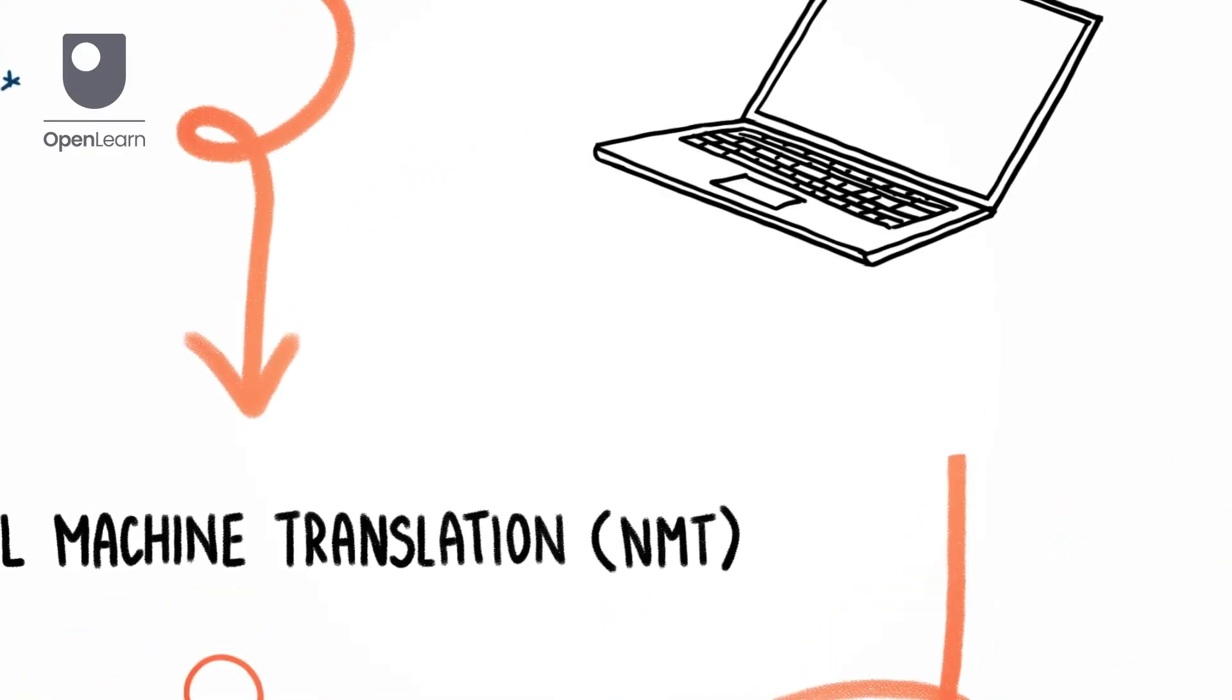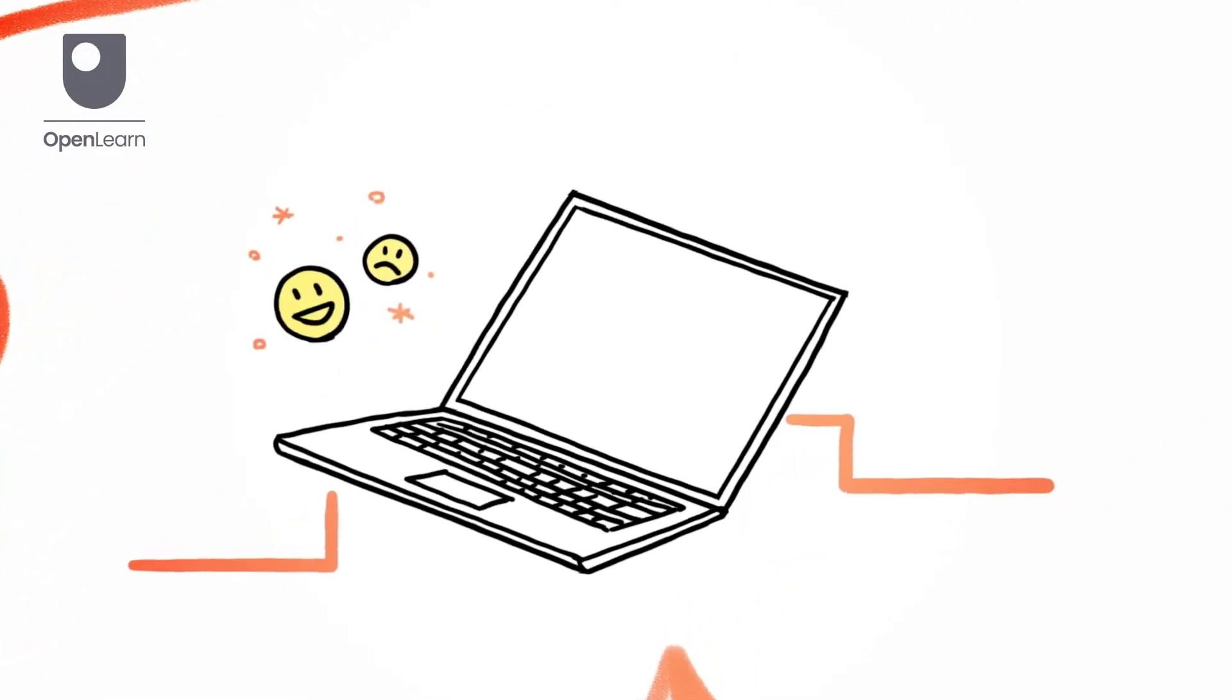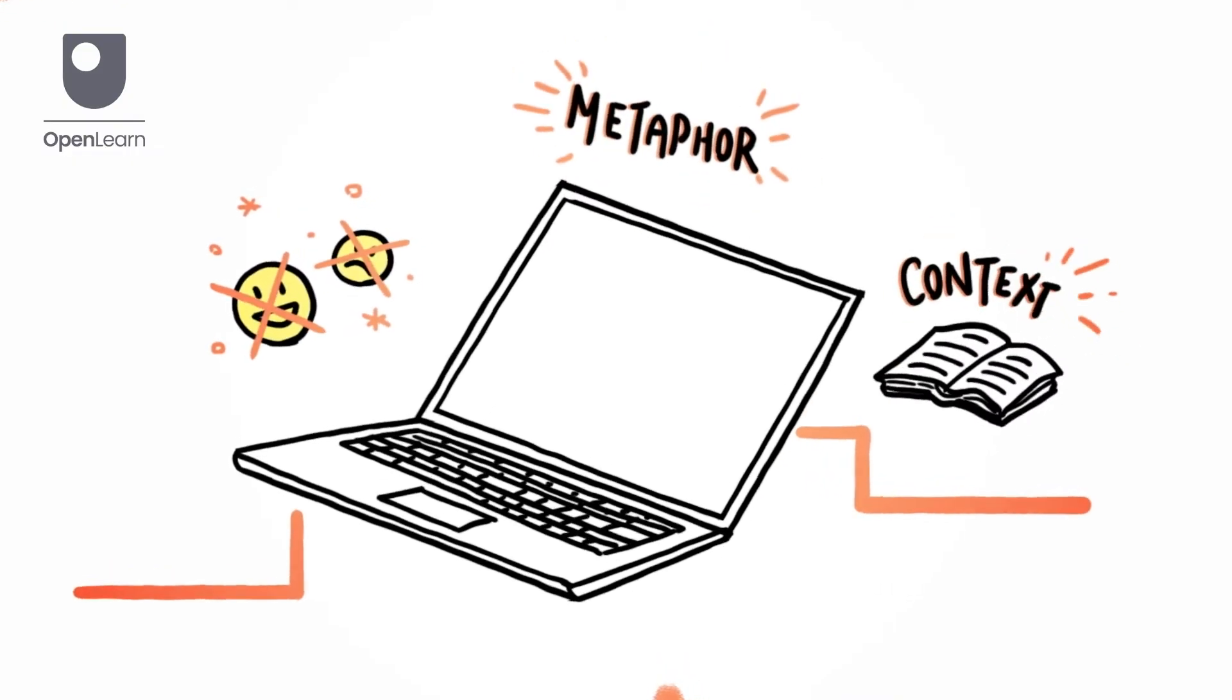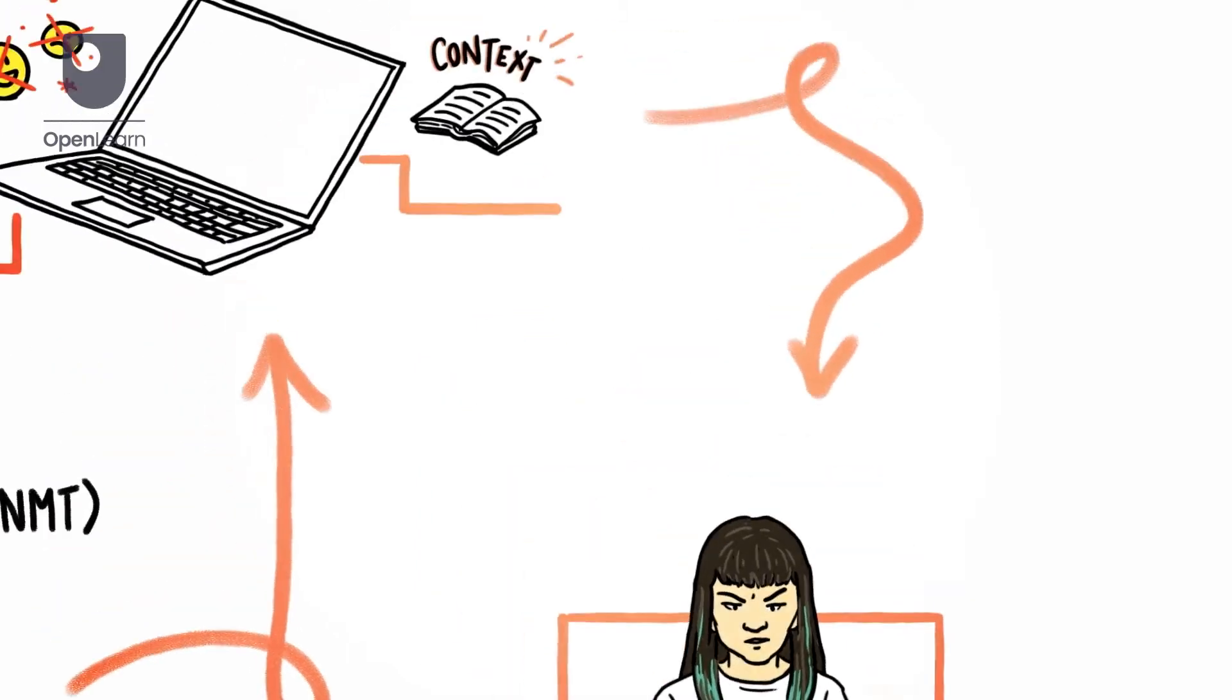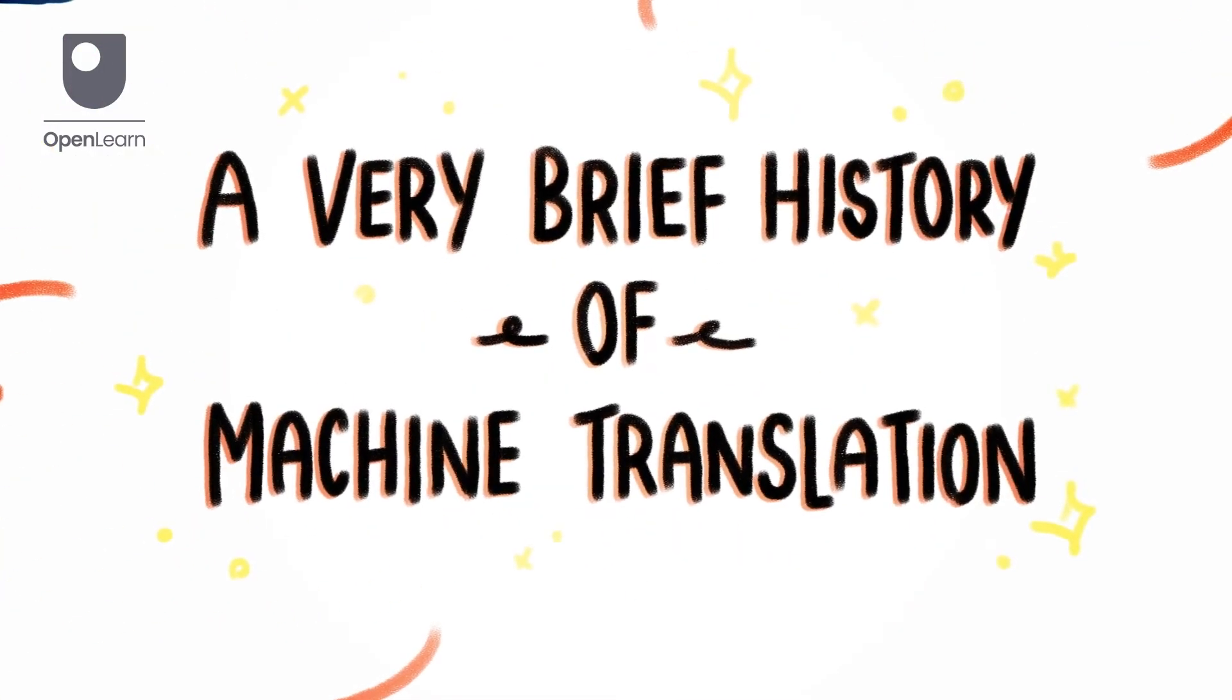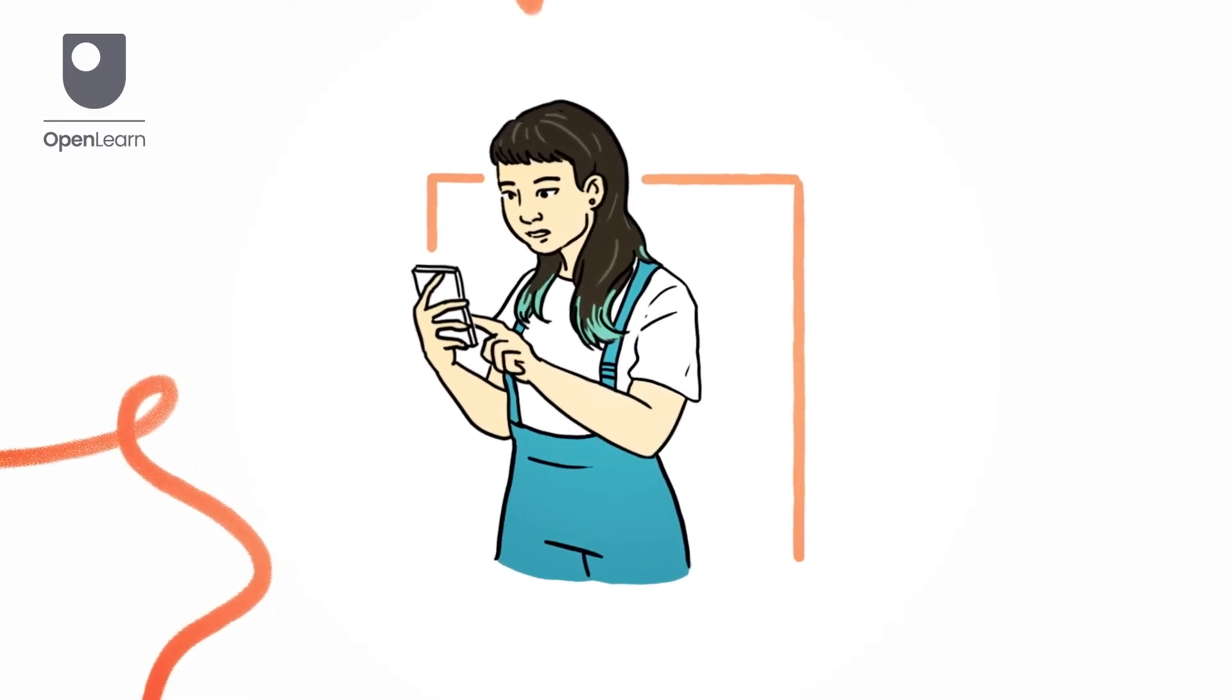While NMT produces more human-like translations, it doesn't understand emotions, metaphors or context, often resulting in errors and biases. Machine translation might seem easy and straightforward, but it has limitations.